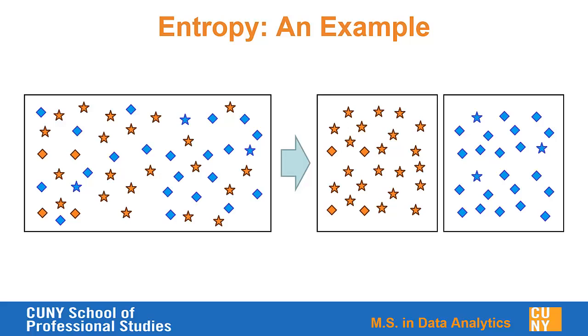In the original box, it was about 50-50, right? 25 stars, 24 diamonds. Pick one at random, I'm almost as likely to get a diamond as I am a star. Partitioning on color makes it much easier for us to do that prediction of whether it'll be star or diamond.